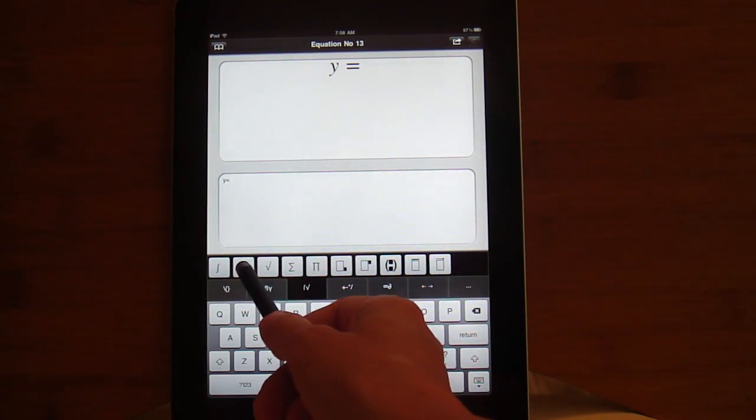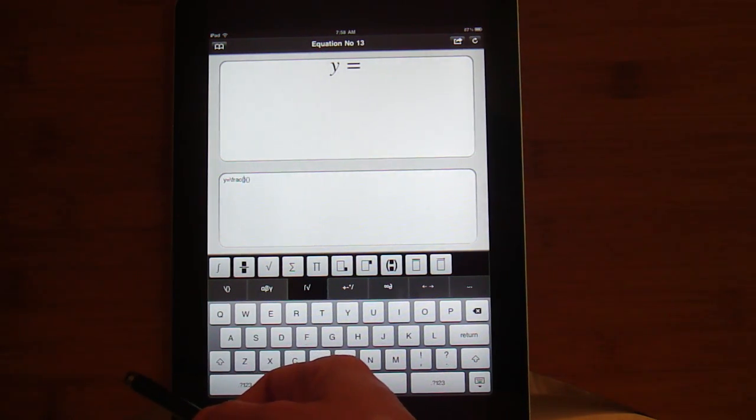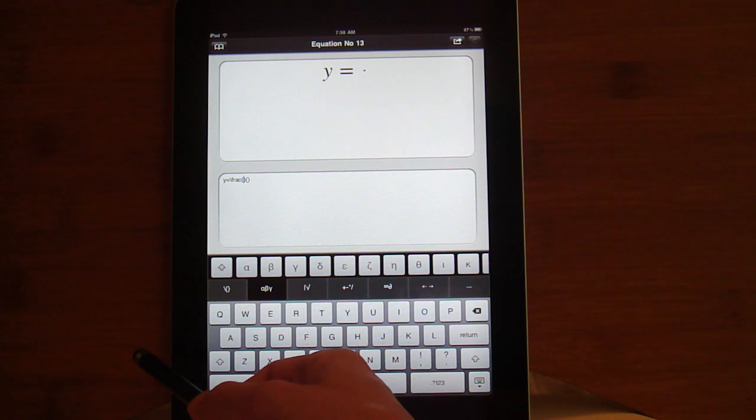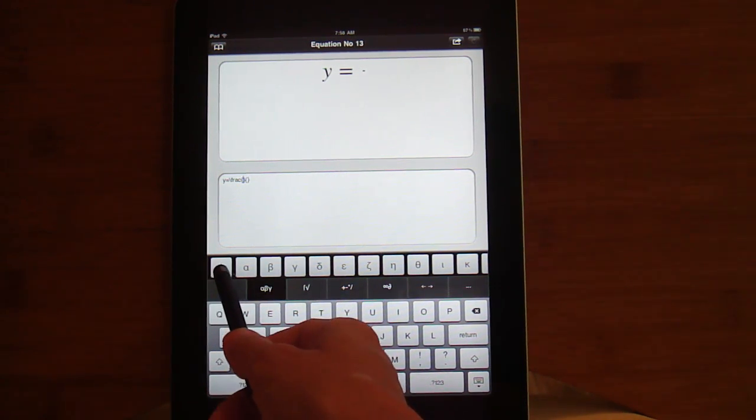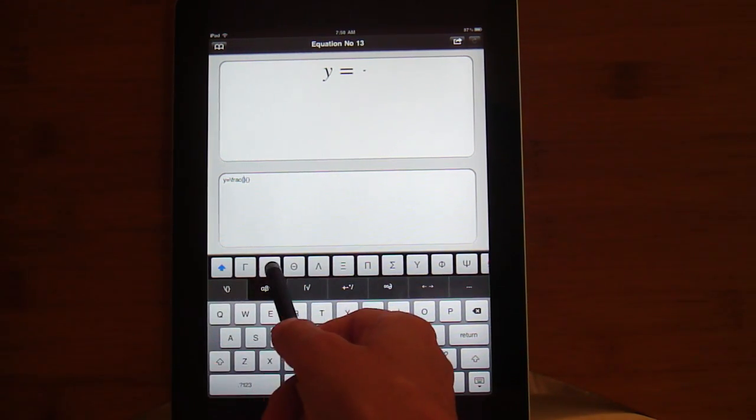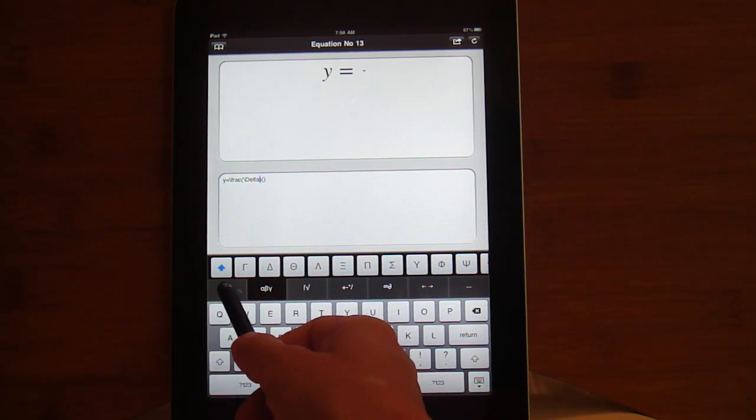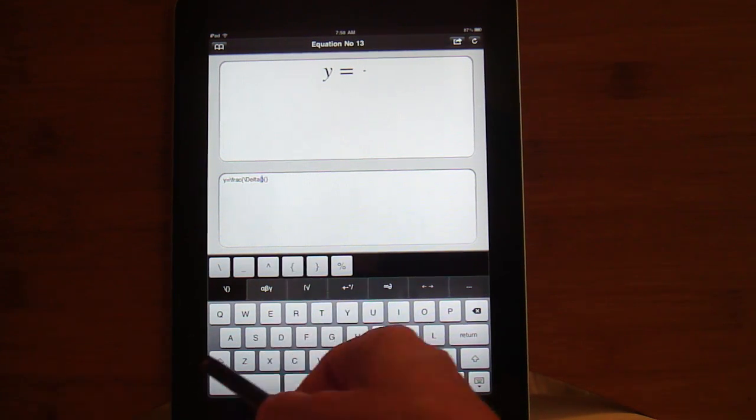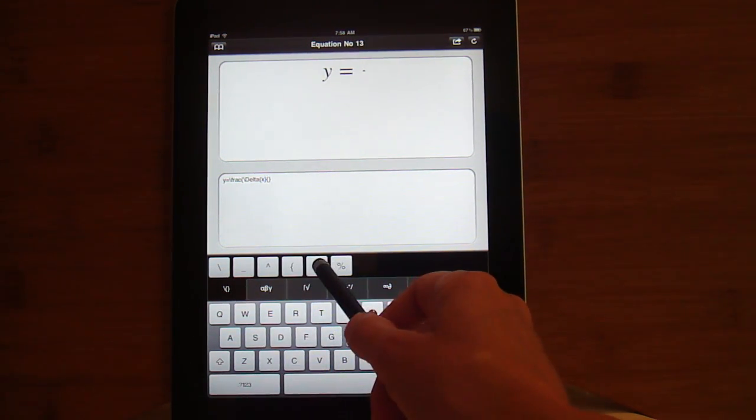I'm going to go to this menu. It's got a fraction option and on top of my fraction I'm going to put delta x. So I'm going to go to my Greek letters, go to the capitals, delta. Now x has to be in braces.